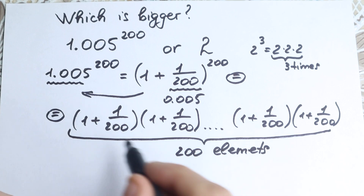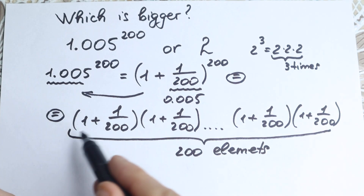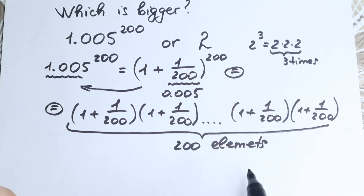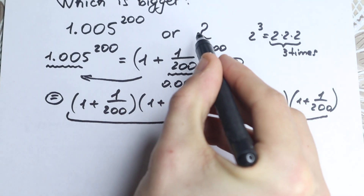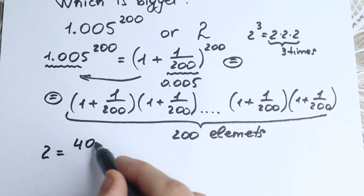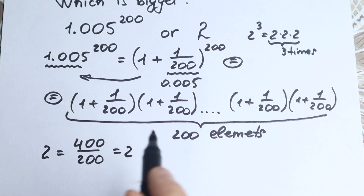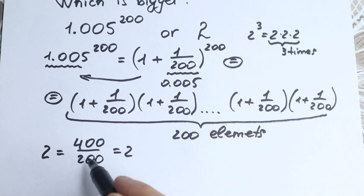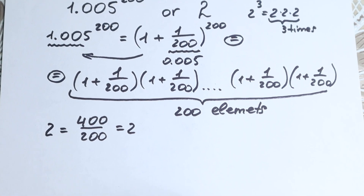But what we're going to do next? This is a product on the left hand side, but on the right hand side we have 2, so it's hard to compare this long product with 2. I suggest we express 2 as 400 over 200 — it is the same value — and this substitution is a really important moment.